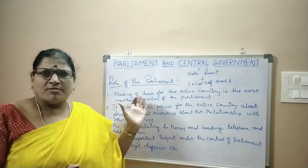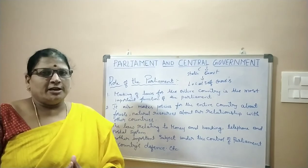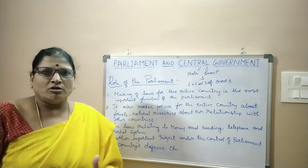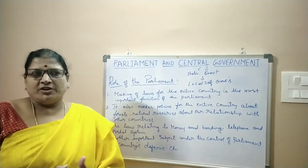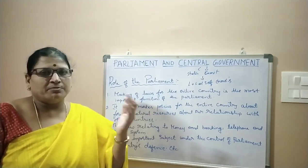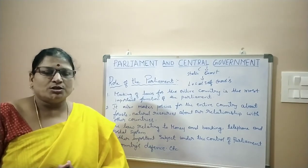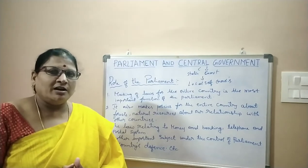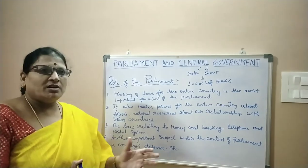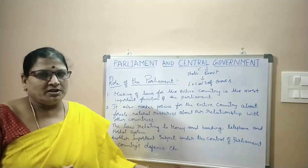Opposite to parliamentary form of government is the presidential form of government, where the president is the real head. The prime minister and other ministers obey the president's orders. We can take the example of America — they have adopted the presidential form of government. Recently we have seen elections where Joe Biden became the president of America, and earlier Donald Trump was the president. Now coming to our country India, we have adopted parliamentary form of government. Narendra Modi is the prime minister of our country.